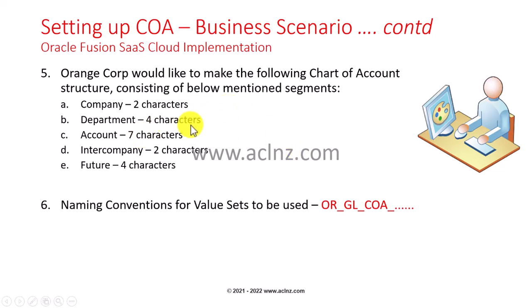Then we have the department value set, which we will create as a four-character wide value set. Departments could be human resources, marketing, sales, inside sales, customer relationship support, and so on. Each department will have a unique identifier which would be four characters long.